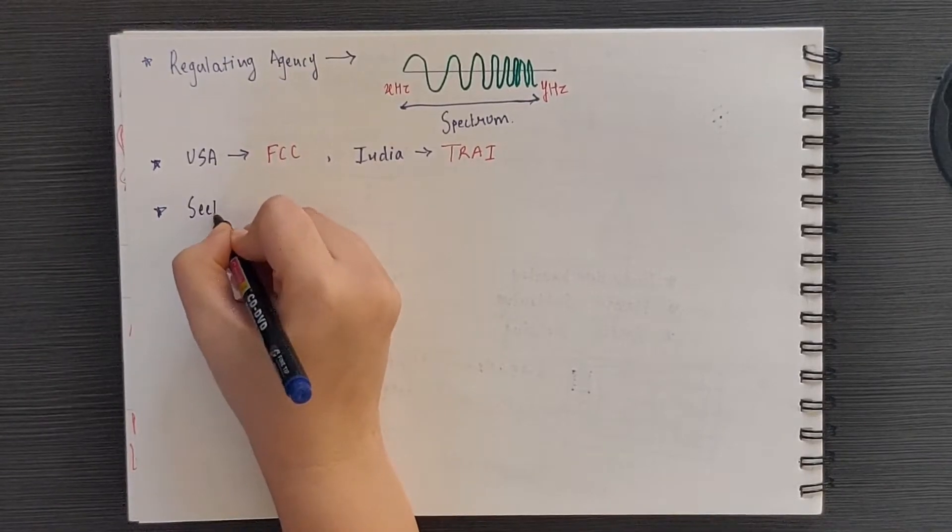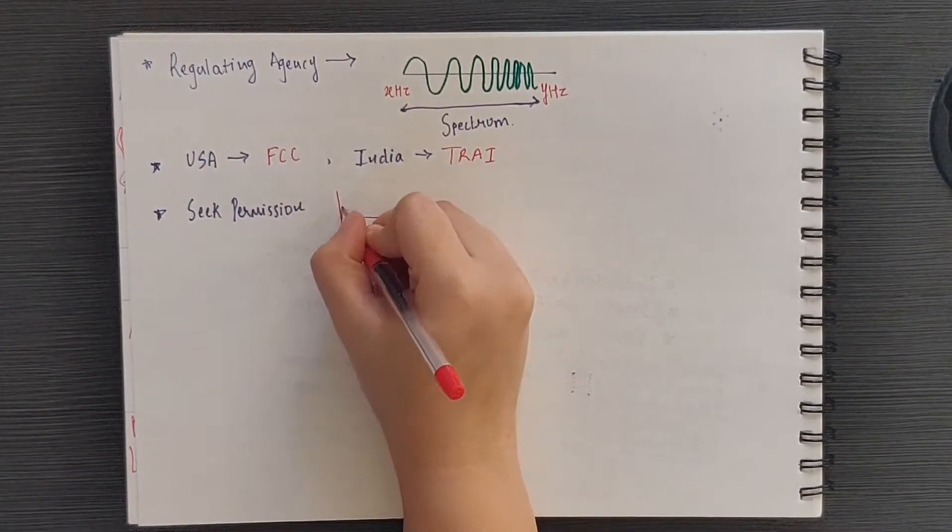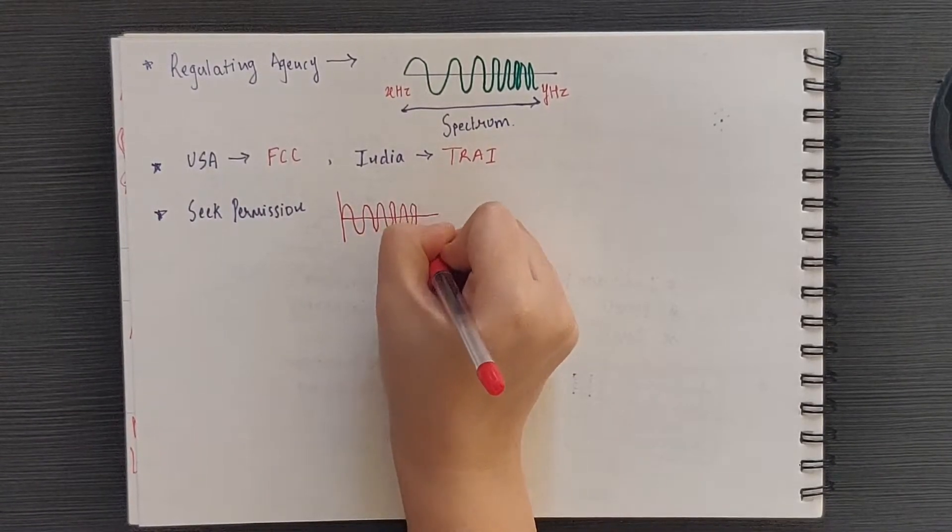Thus, in order to use a particular spectrum, you need to seek the permission from FCC if you are in US or TRAI if you are in India.